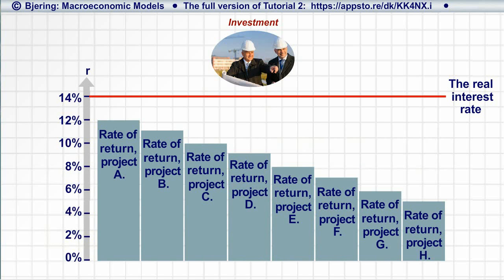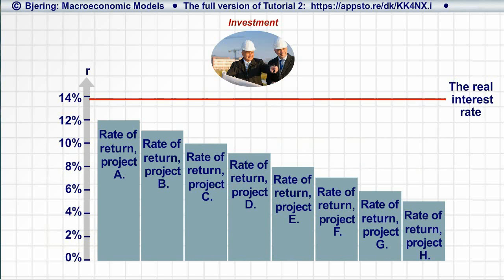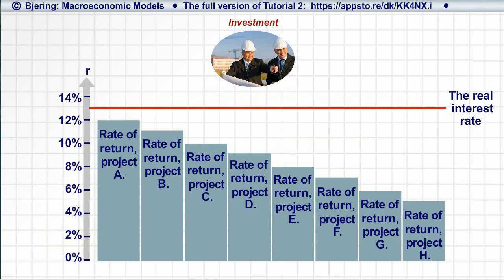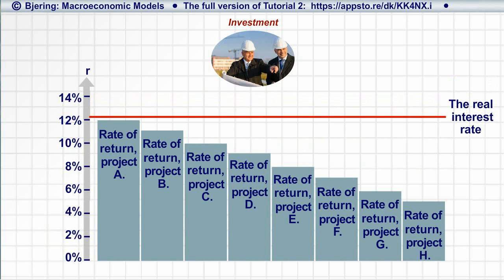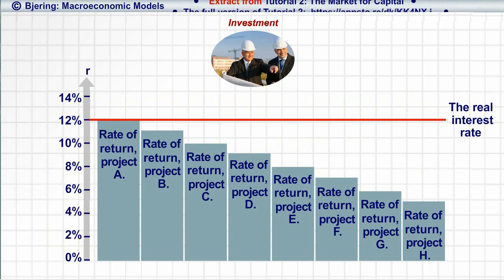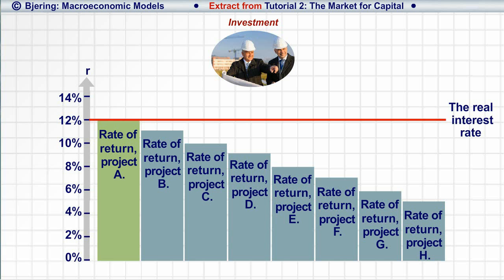Assume now that we lower the interest rate. At a rate of 12%, project A just breaks even, so at interest rates below 12%, project A is profitable and will be realized.